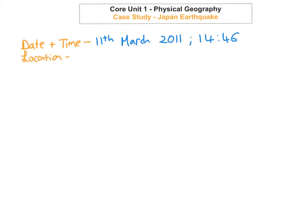So the location of Japan — it's on three tectonic plates. You've got the Eurasian plate, you have the Pacific plate, and you have the Philippine plate. So Japan actually has three plates surrounding them, and the boundary is on three plate boundaries. The type of plate boundary is a destructive plate boundary.